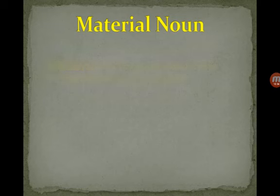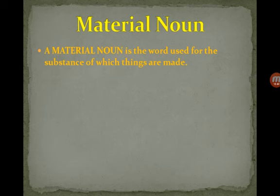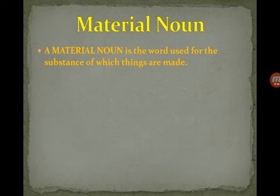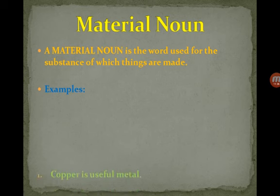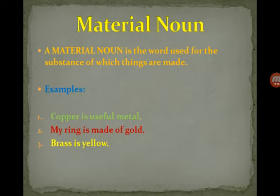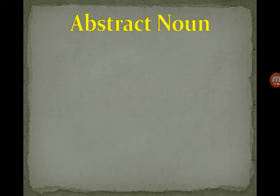Next is material noun. A material noun is the word used for the substance of which things are made. For example, a plastic bottle — plastic is the material from which the bottle is made, so plastic is a material noun. Gold jewelry: you can melt gold to make rings or earrings. Gold is the material noun. Similarly, brass and silver are material nouns. Ring is made of gold; brass is yellow — these are basic examples of material nouns.